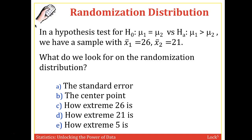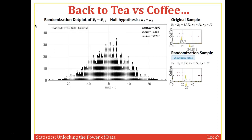Welcome to the video series on Section 4.2. We're looking at randomization distributions, going back to the tea versus coffee example — the immune response example from the first video in this series. The original sample statistic was the difference between the tea drinkers (X1) and the coffee drinkers (X2), which was 17.12. So the tea drinkers had a 17.12 average higher immune response than the coffee drinkers.